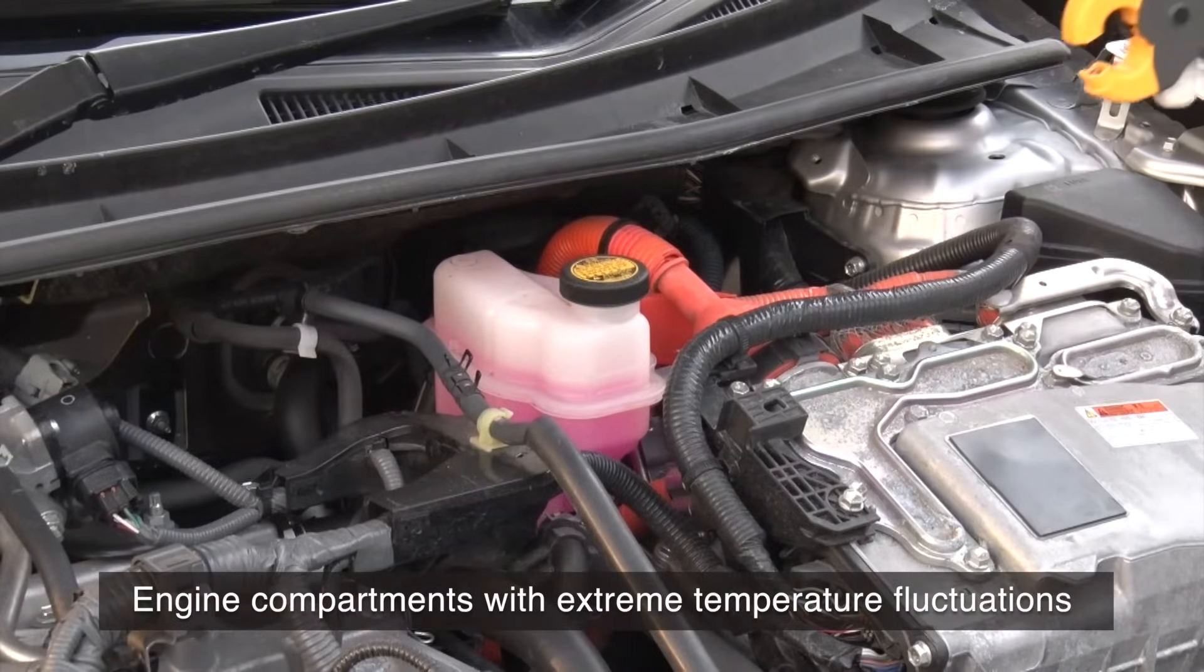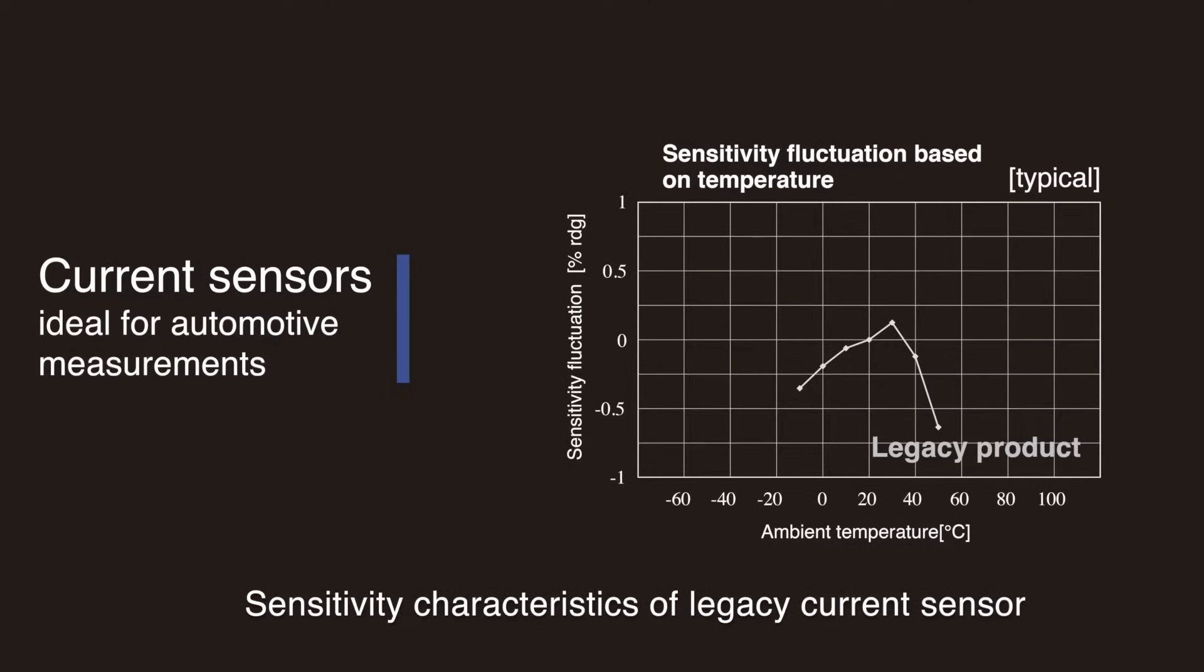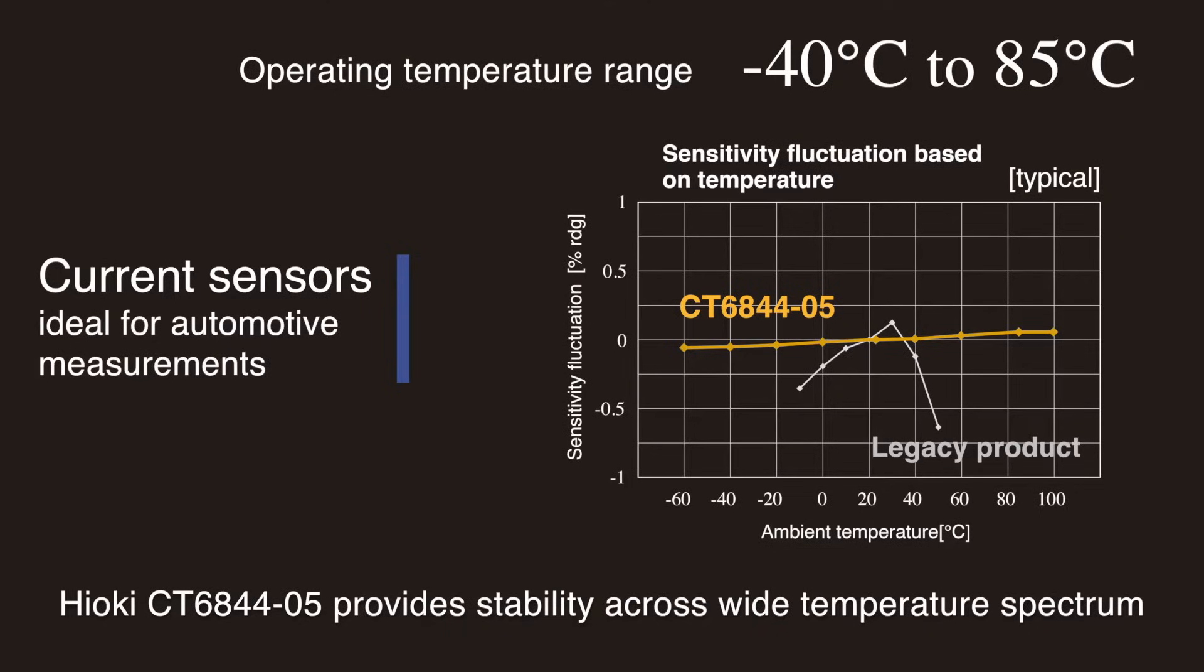For locations such as engine compartments with extreme temperature fluctuations, use current sensors that are ideal for automotive measurements designed to accommodate a wide temperature range. This graph shows the sensitivity characteristics of a legacy current sensor. As you can see, the Hioki CT6844-05 provides stability across a wide temperature spectrum.